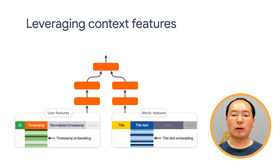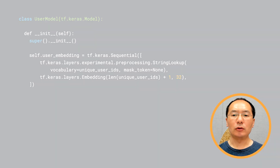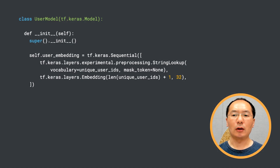In our case, we'll include two user context features — timestamp and normalized timestamp — and one movie context feature, movie title text, in our model. If you have done any feature engineering before, this will look very similar. I also encourage you to include more context features in your own experiments to see how additional features affect your model performance. We're going to use a retrieval model to demo how to do this.